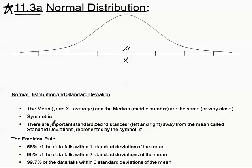On either side of our mean, there are important standardized distances, or values, to the left and to the right of the mean, and we call these standard deviations. They're represented by another little Greek letter that we call sigma. It's the lowercase version of the uppercase sigma we've been using for summation notation, but here we're talking about lowercase sigma.